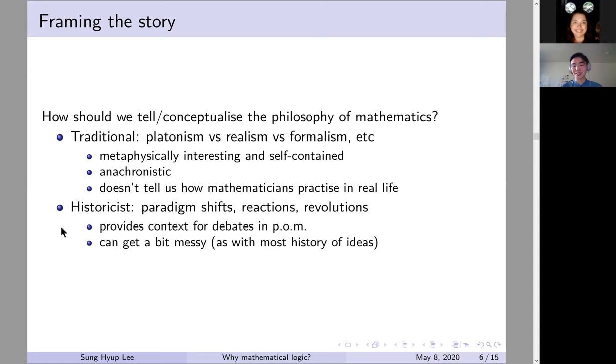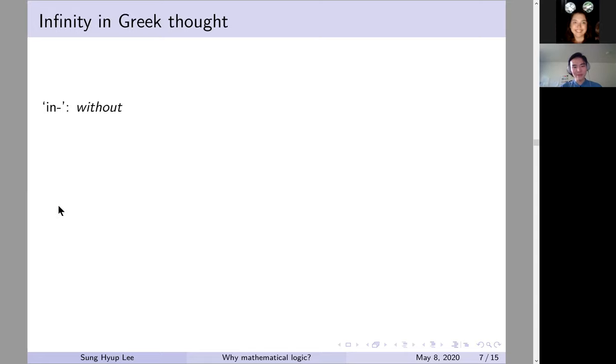And it's also pretty self-contained. You don't have to talk about things that are outside the traditional philosophical tradition. It's pretty anachronistic. It doesn't really deal with how mathematicians really do mathematics, how they think about the things that they deal with in their day-to-day life. So, for this talk, I offer a more historicist viewpoint, to borrow Thomas Kuhn's terminology, paradigm shifts, reactions, and revolutionary ideas in the history of mathematics.